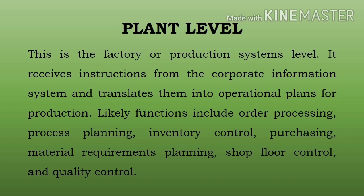Likely functions at plant level include: order processing, process planning, inventory control, purchasing, material requirement planning, shop floor control, and quality control. Order processing mein discuss karte hain ki kaun sa order process karna hai. Process planning mein kaun si process karni hai uski planning hoti hai. Inventory control mein raw material ka stock dekhte hain — kitna bahar gaya, kitna buffer stock hai, finished product kitna hai, demand aur supply ke hisaab se inventory control karte hain.